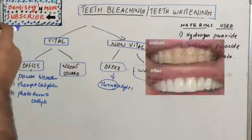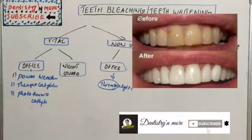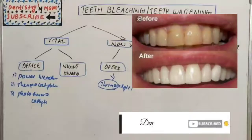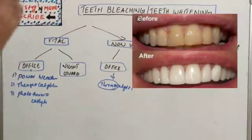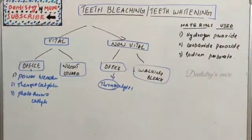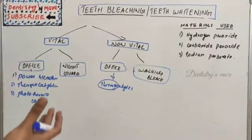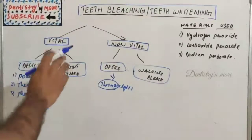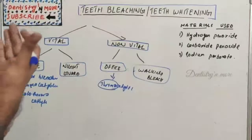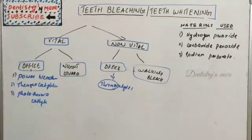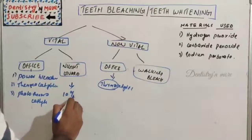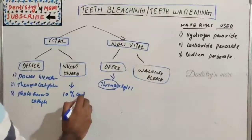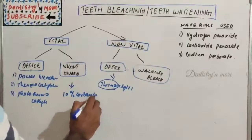Night guard bleaching is the most commonly used technique because it is easy to perform and less expensive. We need to create a custom tray based on the patient's teeth before giving the material to the patient to perform bleaching at home. It commonly uses 10% carbamide peroxide.